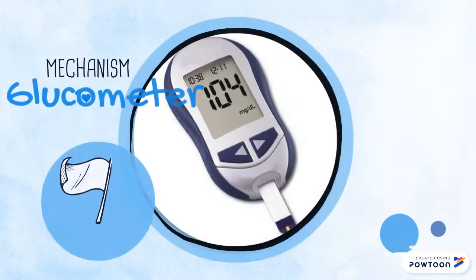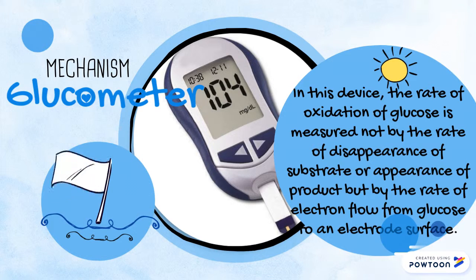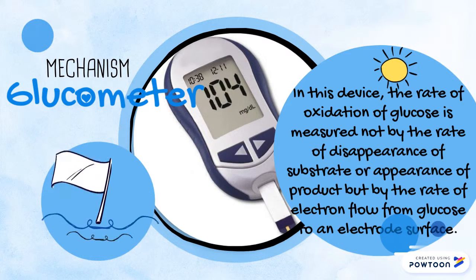Glucometer is one example of a second generation glucose biosensor. In this device, the rate of oxidation of glucose is measured not by the disappearance of a substrate or appearance of a product, but by the rate of electron flow from glucose to an electric surface.